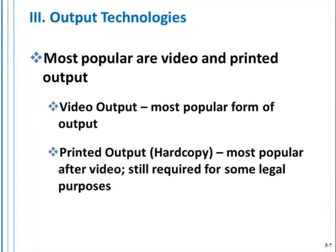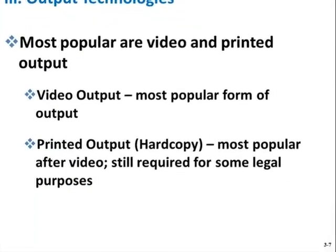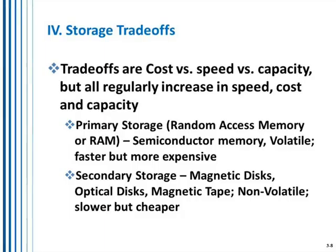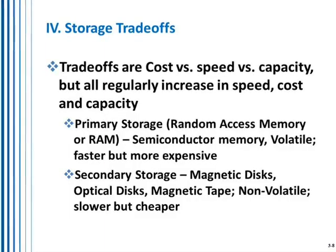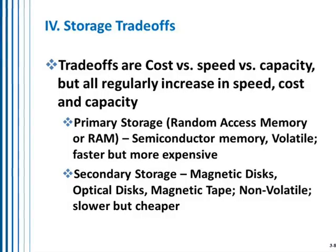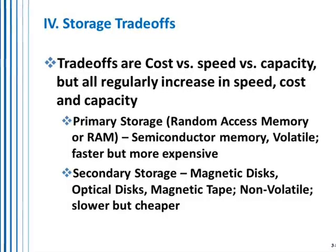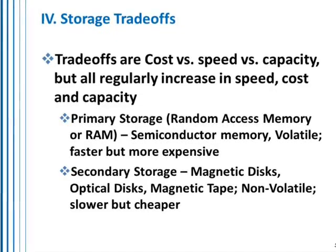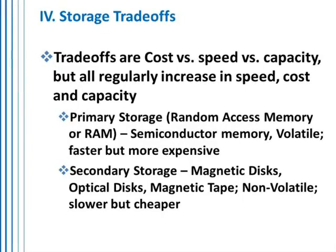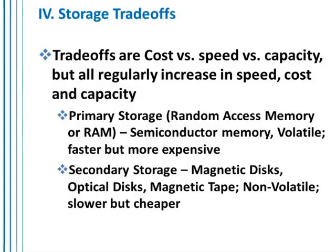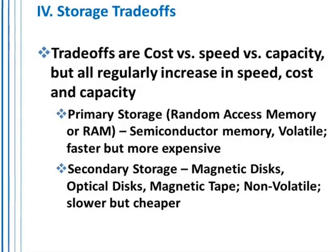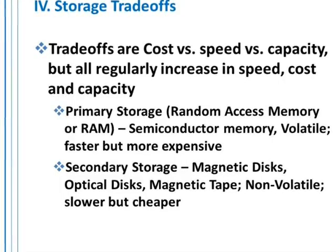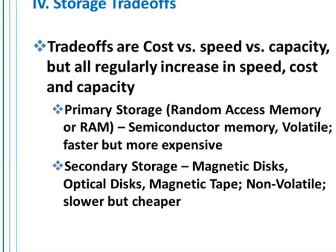The most popular output devices are video and printed output — hardcopy, which is also called paper. There are different types of storage within a computer and even in your cell phone. There's primary storage, which is random access memory, and then secondary storage, which can be in the form of micro SD cards. You don't find those in Apple devices, but many Android phones have the ability to add more storage.